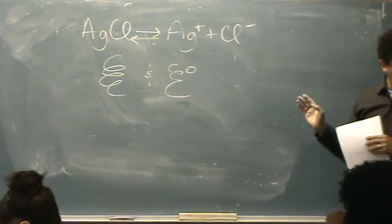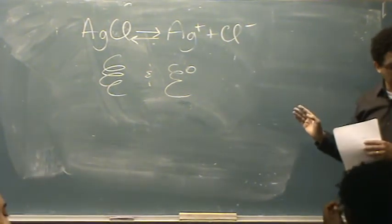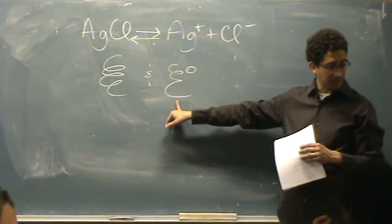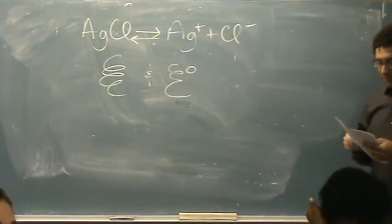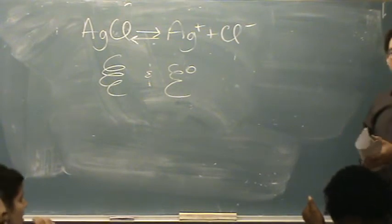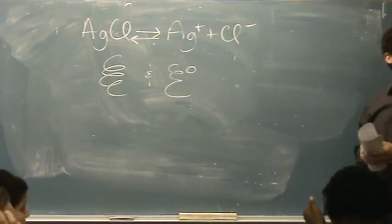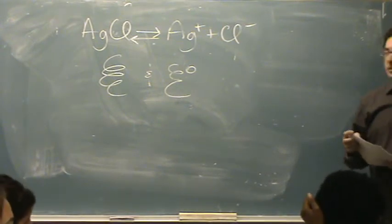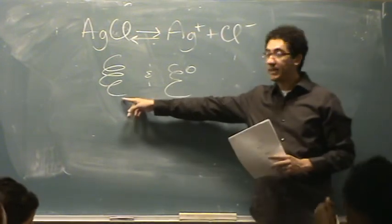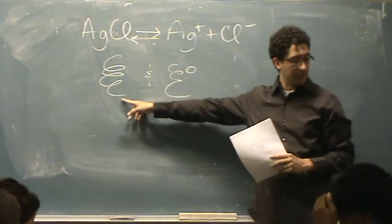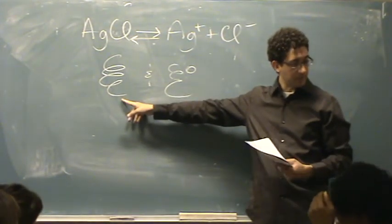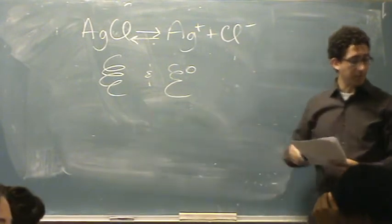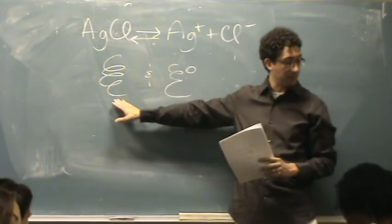However, we're given no other information about the reaction. This might indicate, because it's negative, it's not spontaneous. However, we're given no other information — there are no stresses given in the problem. So for E, we're assuming it's zero, because the question is at equilibrium. We're assuming equilibrium, in which case E has to be zero.